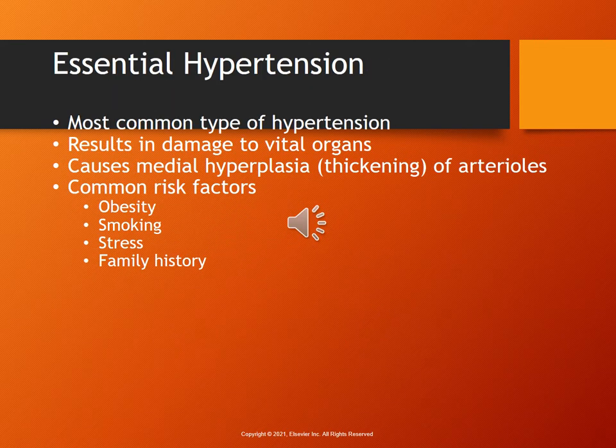Essential hypertension — there is no known cause. It is also known as primary hypertension. This is the most common type of hypertension, and it results in damage to vital organs. It causes a thickening of the arterioles. Common risk factors include obesity, smoking, stress, and family history.